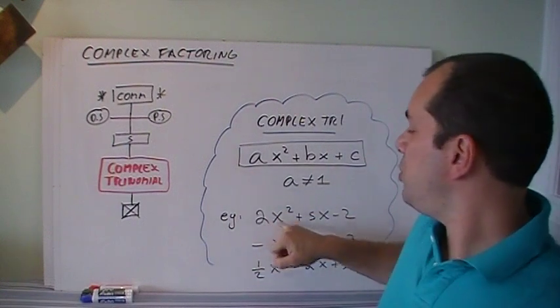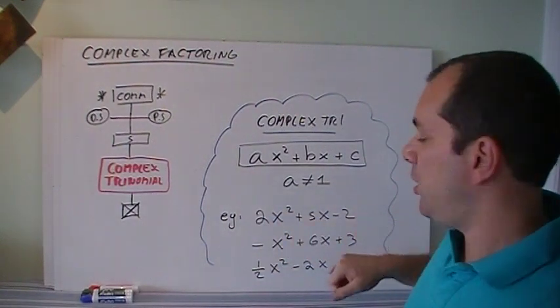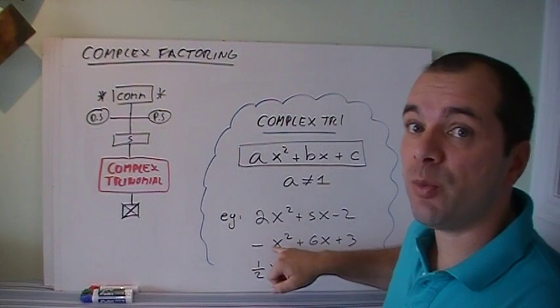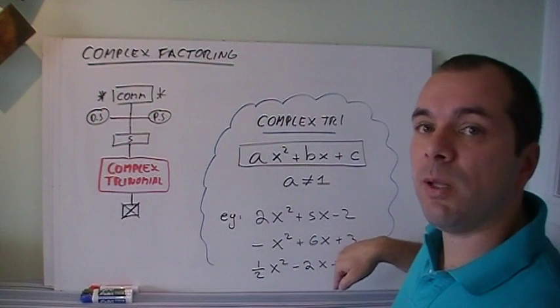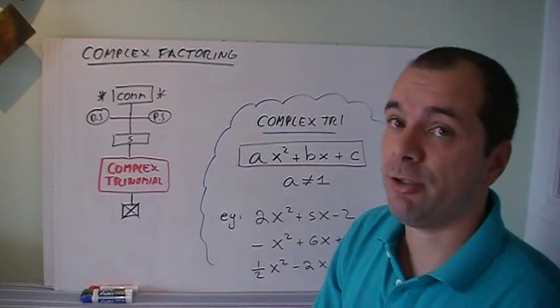So for example, 2x squared plus blah blah blah, or minus x squared, that's not one, that's minus one, so it's a complex trinomial. Half x squared minus blah blah blah. Those are all complex trinomials.